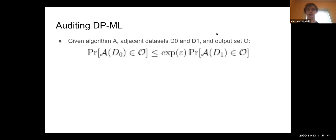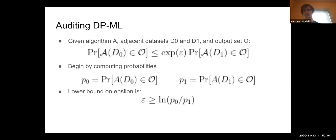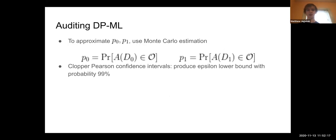Our approach takes a different technique. We start exactly with the definition of differential privacy—this probabilistic guarantee given some dataset, a pair of datasets and an output set, you have this restriction. Basically, what we do is we just compute these probabilities. If you can compute these probabilities, then you can get a lower bound on epsilon directly. Unfortunately, for even moderately complicated algorithms like DPSGD, these probabilities aren't really easy to compute. So what we do is use a Monte Carlo estimation.